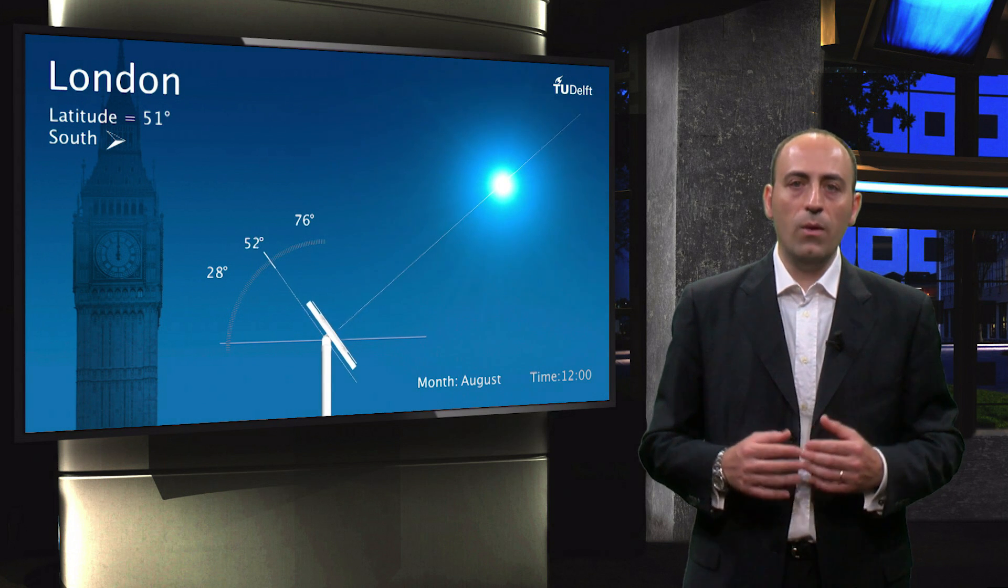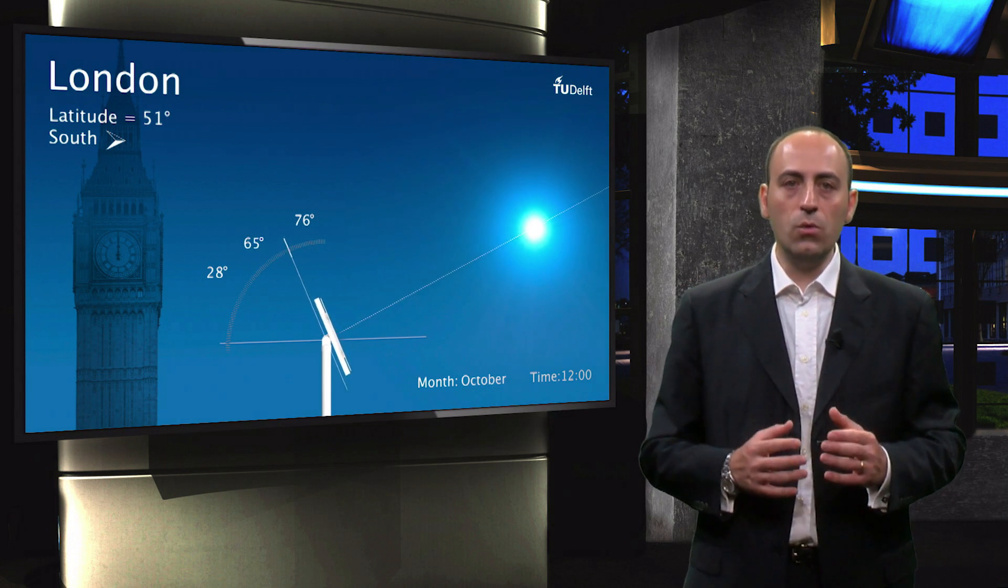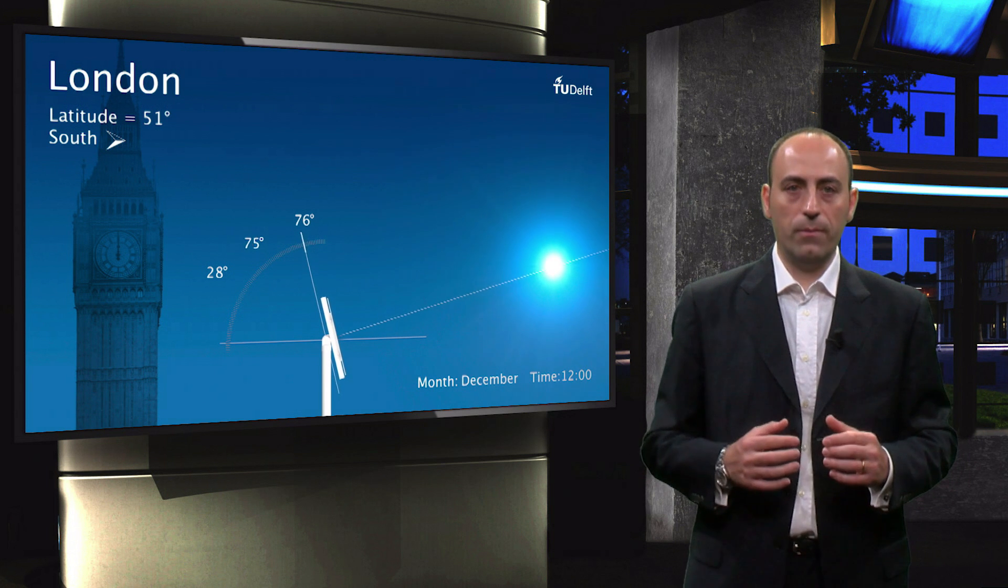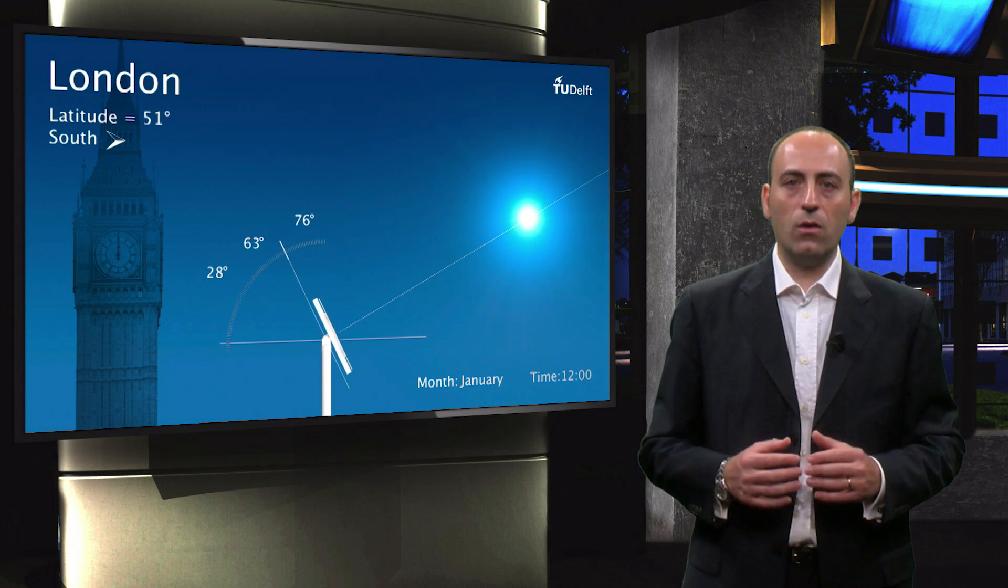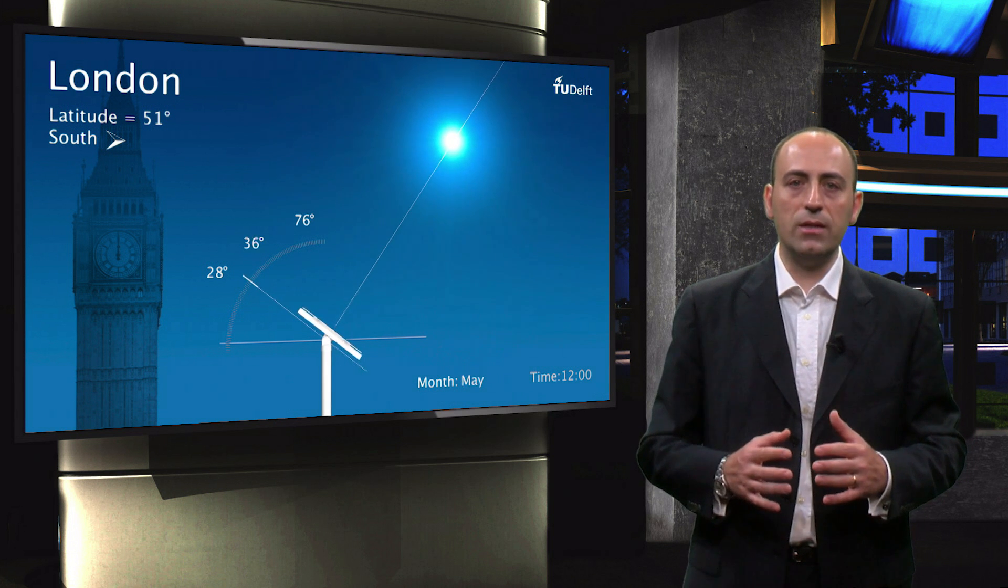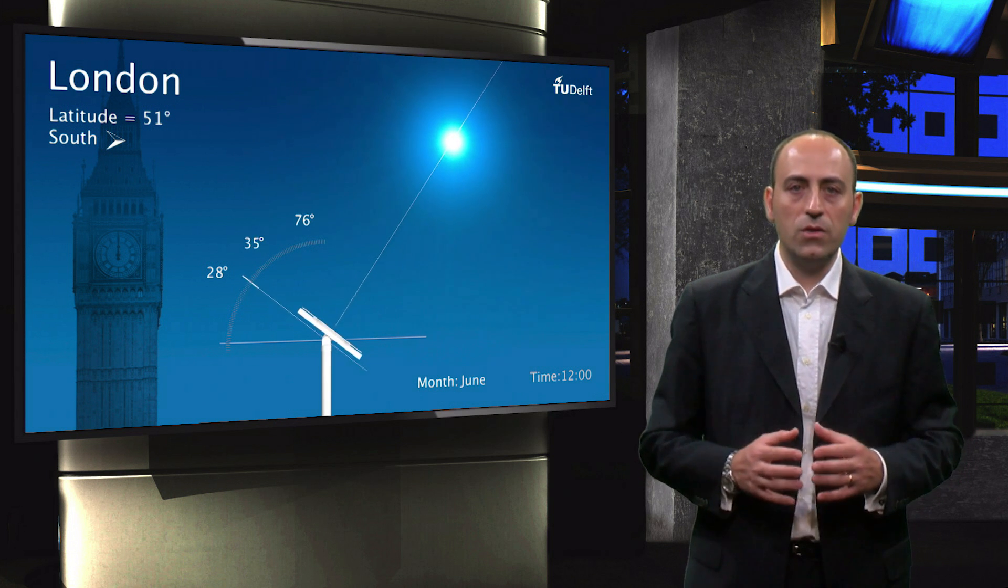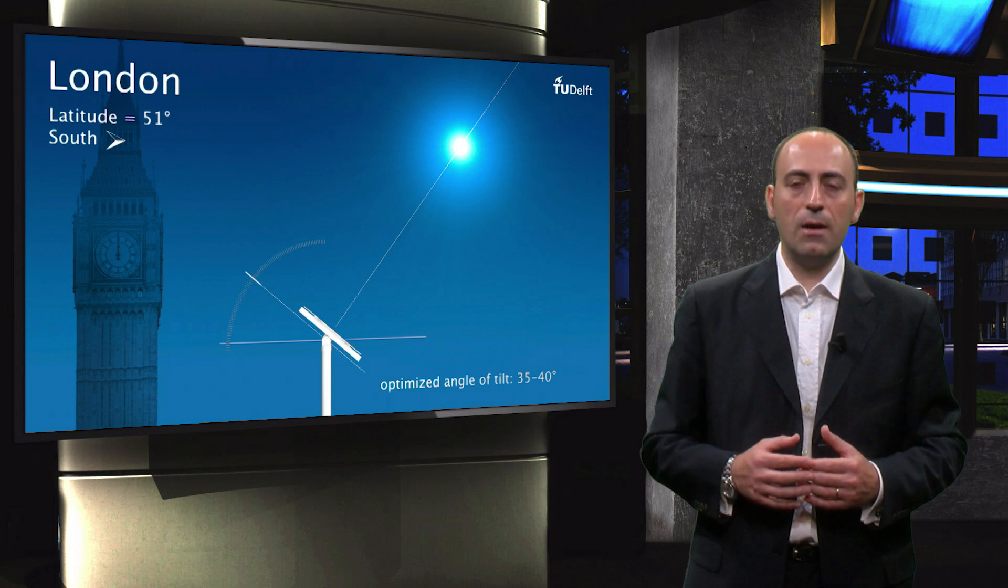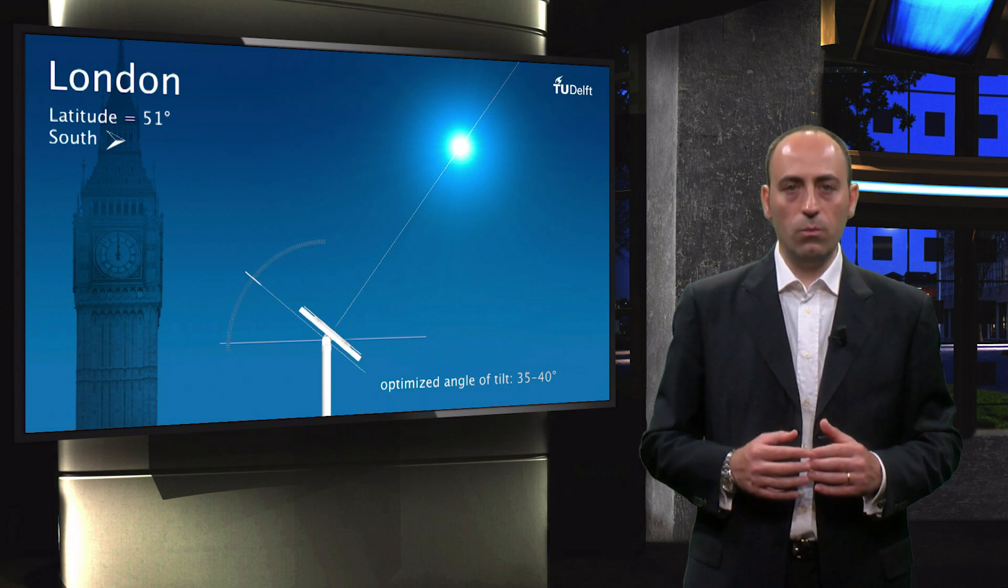In this animation, we can see the position of the sun at noon in London over the whole year. The optimal tilt angle of the module changes throughout the year as the position of the sun in the sky changes. The sun is high in the sky in summer and low on the horizon in winter.